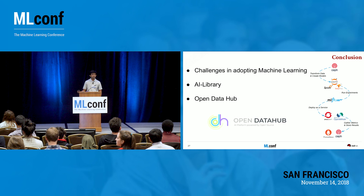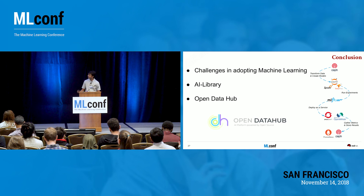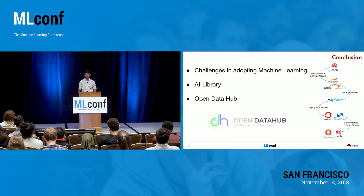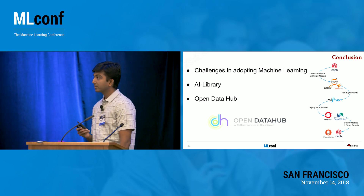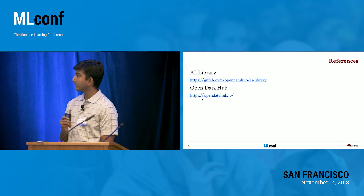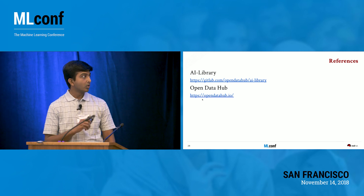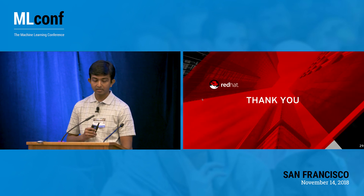That concludes the talk. We saw some of the challenges in adopting machine learning and how we can use open source frameworks and platforms from Red Hat to experiment with machine learning. I also call on the community to build around these open source frameworks and platforms. The links to the AI Library and Open Data Hub resources — where all the documented models can be found — are provided. Thank you.